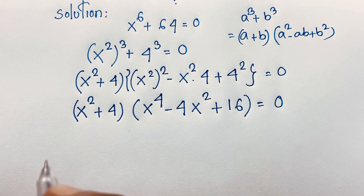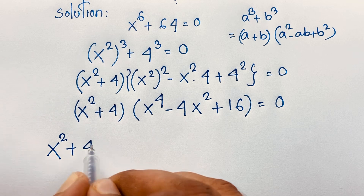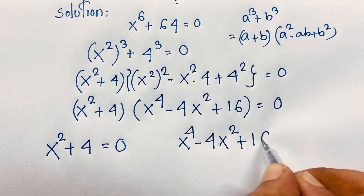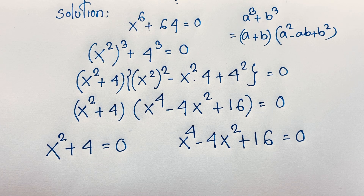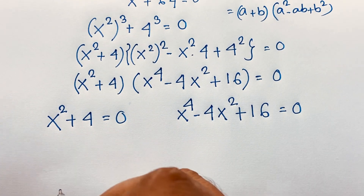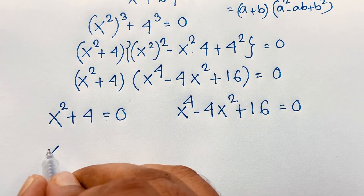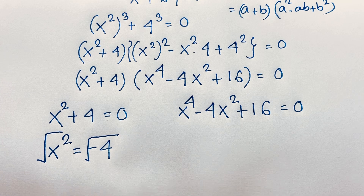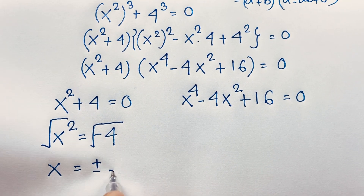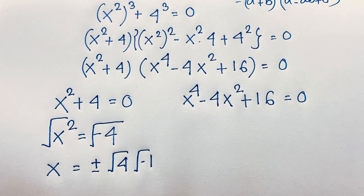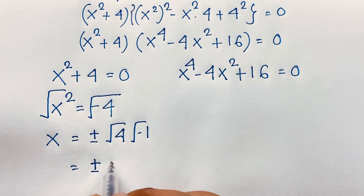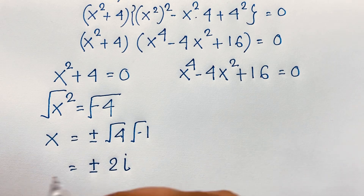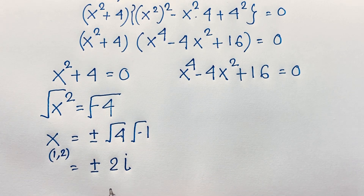Now we'll find out two cases. Our first case is x squared plus 4 is equal to 0. For this case, x squared is equal to negative 4. I subtract 4 from both sides. Then, if I use the square root on both sides, you can see that x is equal to plus or minus the square root of 4 times the square root of negative 1. That gives us plus or minus 2i. We know that the square root of negative 1 is i. It is a complex number, a complex solution. So x₁, x₂ will be plus or minus 2i.